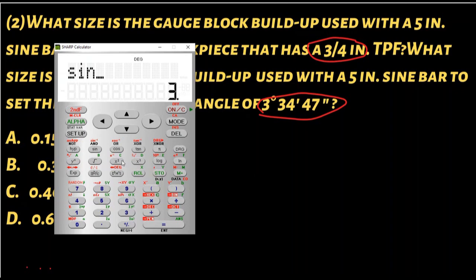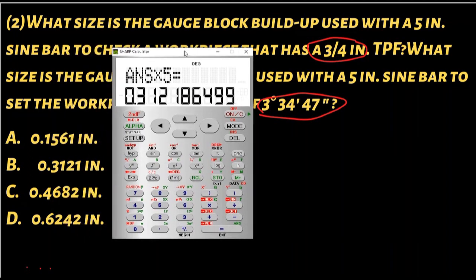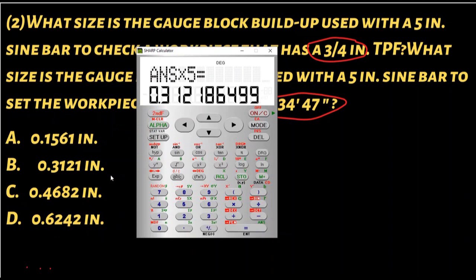So we're going to go 3 degrees DMS 34 DMS 47, then we're going to say this is a 5 inch sine bar, then we're going to say equals times 5 equals and we have our answer here. That's one way.